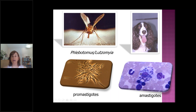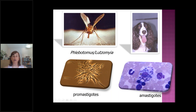And amastigotes, which are unicellular protozoa that infect cells — mainly macrophages and other cells from the mononuclear phagocytic system.